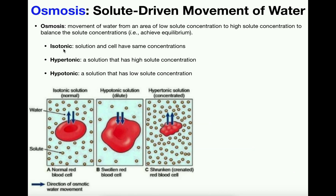If we have an isotonic situation, that's where the solution and the cell have the same concentrations. This is what we want to happen and is always what we're trying to move toward. Iso means the same, so it's the same concentration outside the cell and inside the cell. When that happens, the net diffusion of water — or osmosis — is balanced. For any water that leaves the cell, an equal amount comes in. Isotonic is balanced both in terms of the direction of diffusion of water and the concentrations.